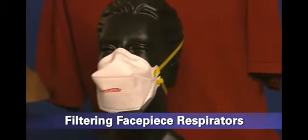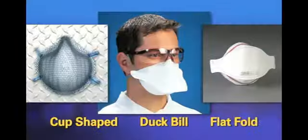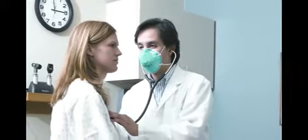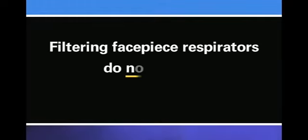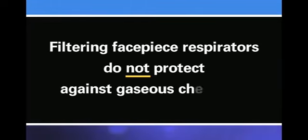Myth: All respirators offer the same level of protection. The truth is that different types of respirators protect against different hazards and offer different levels of protection. When your employer selects respirators, they must first identify the hazard and then consider the respirator's level of protection and the expected workplace exposure level. These are filtering face piece respirators, sometimes referred to as N95 or TB respirators. They come in a variety of configurations such as cup-shaped, flat fold, and duck bill.